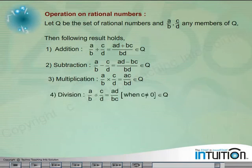Fourth, division: A by B divided by C by D is equal to AD by BC when C is not equal to 0 belongs to Q.